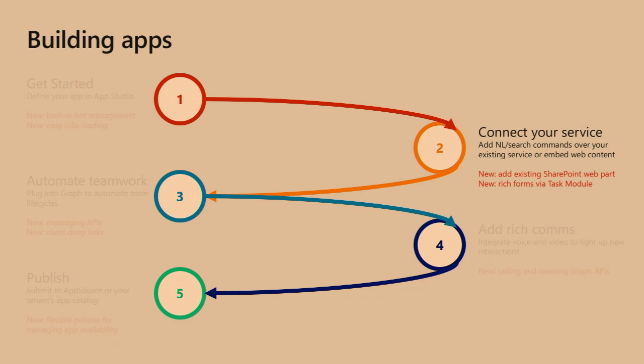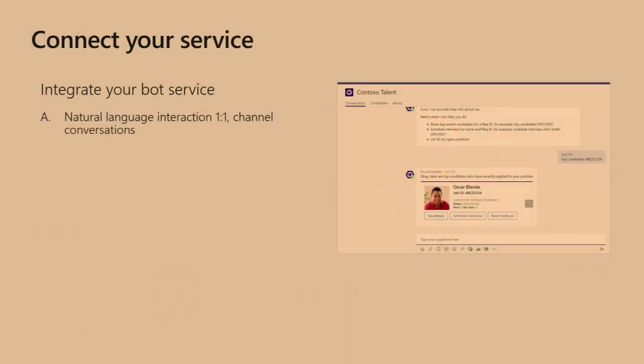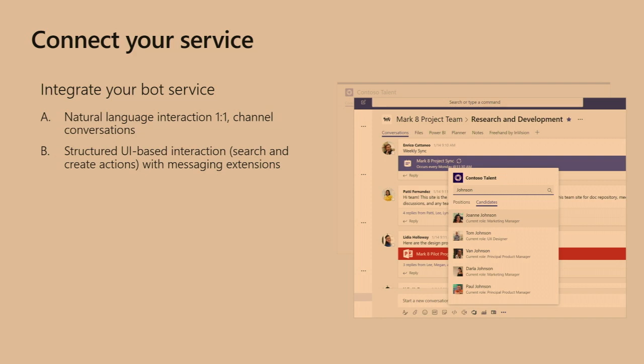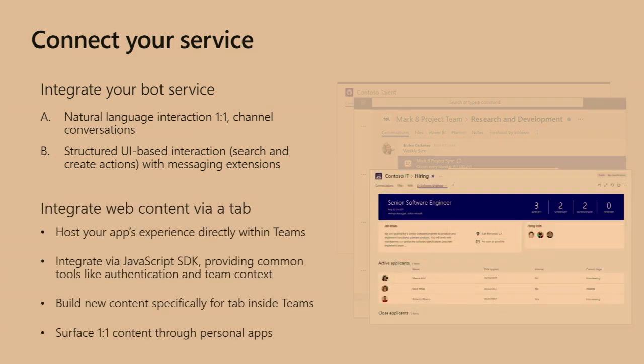The second thing to think about is how do you connect to your service? If you've already got a bot, we can plug it into Teams for channel conversations or one-to-one conversations. We can also think about a more structured interaction through messaging extensions — going into your application, pulling information from your service, and injecting it into Teams through a card. Finally, we have an iframe we can take advantage of for tabs to pull content in that way. You can see here that an application can look very well-integrated within Teams — an end user wouldn't really know it wasn't part of the product.